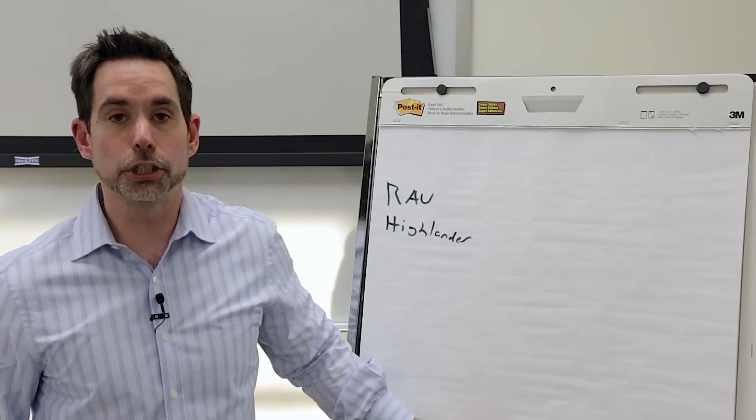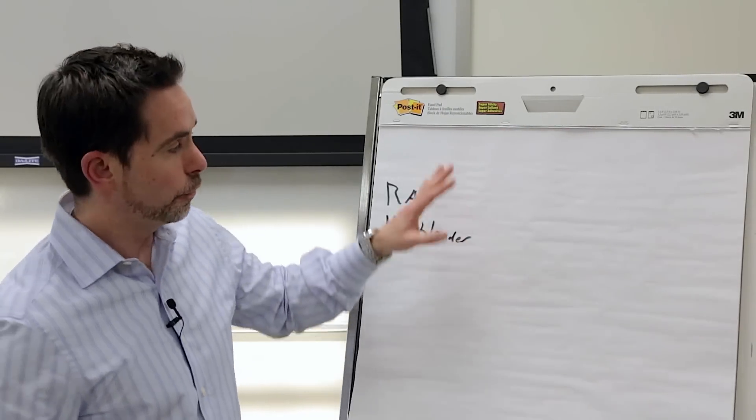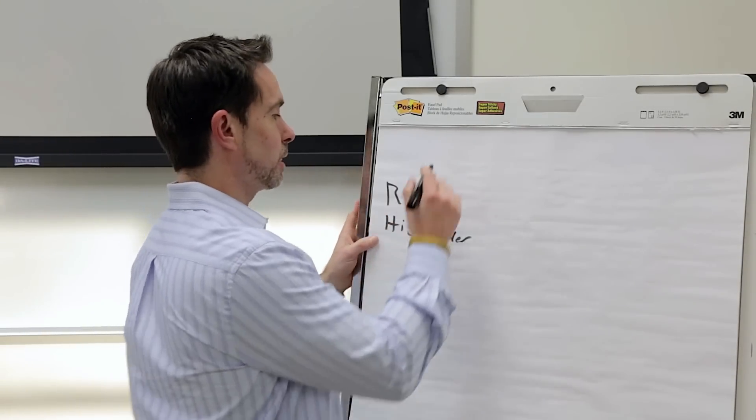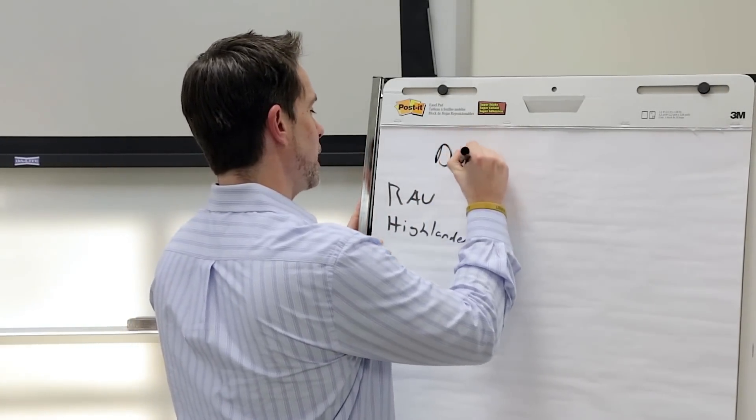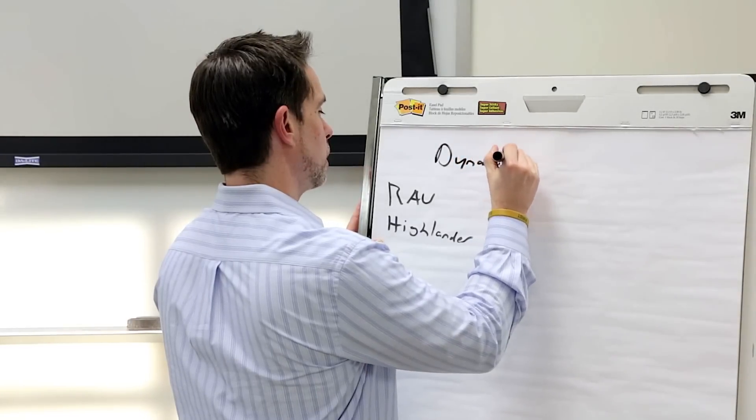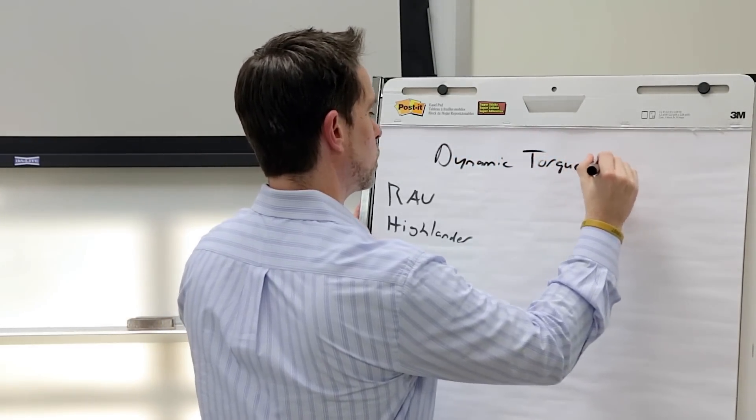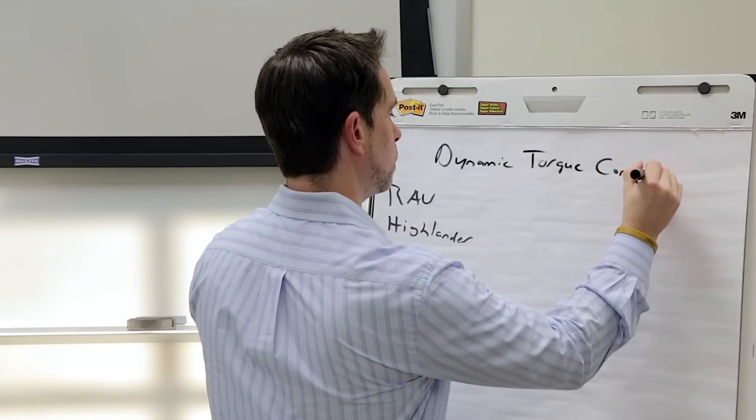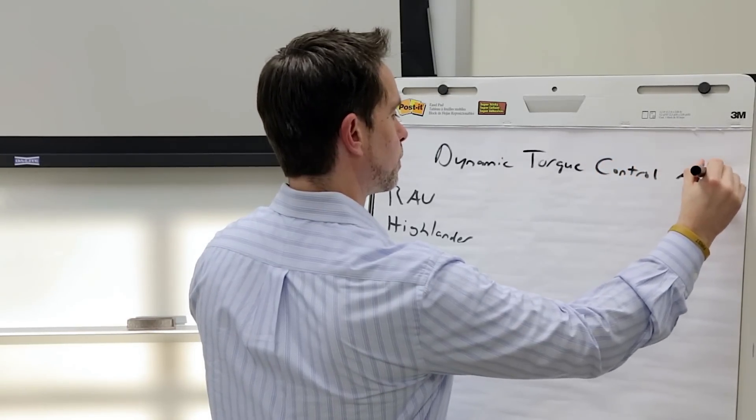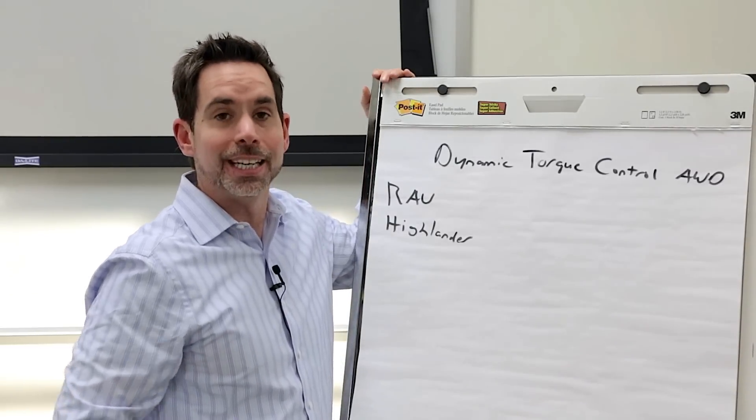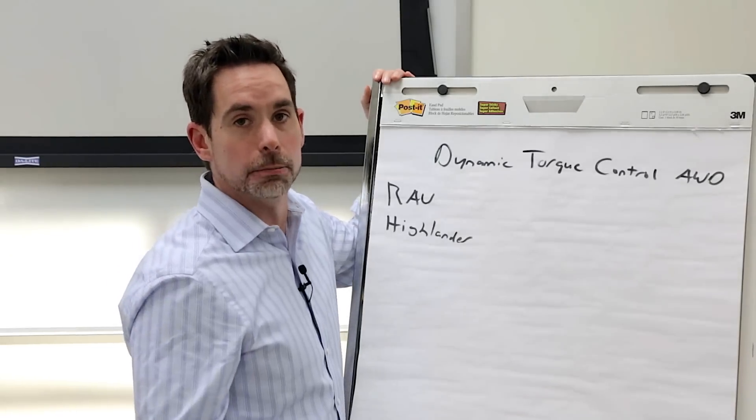Literally, take a piece of paper and show the customer what it does. And the first thing you want to do is write down the name of the all-wheel-drive system. And in this case, it is dynamic torque control all-wheel-drive. The reason I like you to write out the name is because once something has a name to it, it sounds more valuable.